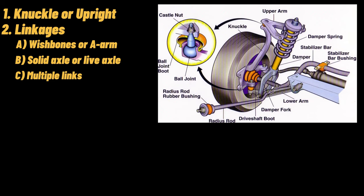C. Multiple links. This is the most commonly used in cars. In this, multiple small linkages are used in place of wishbone arm and solid axle. With the help of these multiple links, the knuckle, frame, and suspension system are connected together.